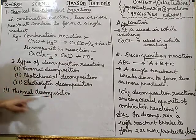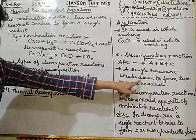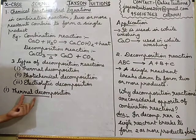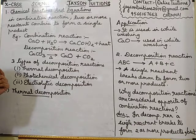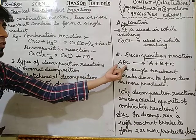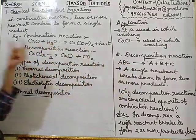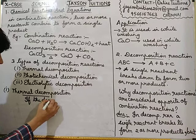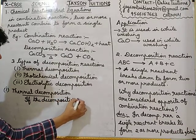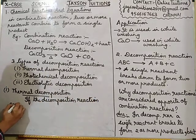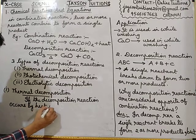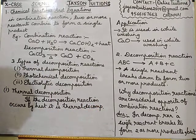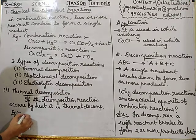Thermal decomposition: decomposition means a single reactant breaks to form two or more products. Thermal means heat. So if the decomposition reaction takes place with the help of heat, then it is called thermal decomposition. If a reactant is breaking with the help of heat, it is called a thermal decomposition reaction.